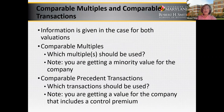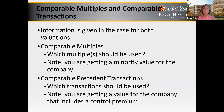Besides the DCF valuation, you need to value PCC using comparable multiple ratios and comparable precedent transactions. You have the information in the case for both of these. You should decide which multiple ratios to use, which comparable companies to use, and which comparable precedent transactions to use. Note that with comparable multiples, you're getting a minority value — a stock price for the company. With comparable precedent transactions, these are transactions that have already been made, and you will get a value that includes a control premium.